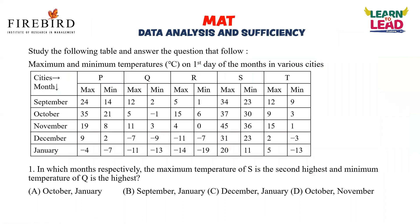First we will take this question, which is based on temperature. In the horizontal part they have given PQRST and its maximum and minimum temperature in various months starting from September to January. The first question is: in which months respectively is the maximum temperature of Y the second highest, and the minimum temperature of Q the highest?